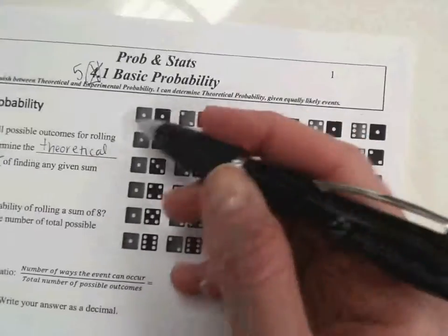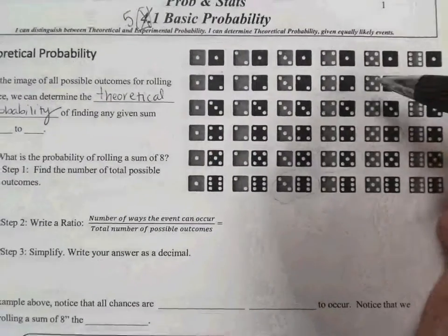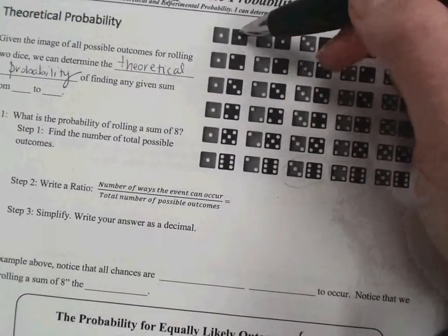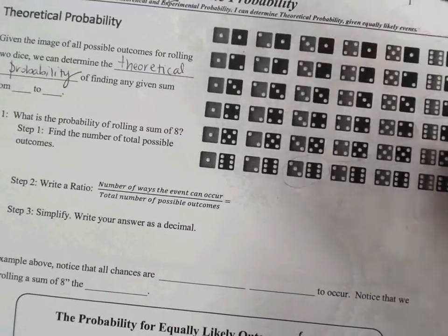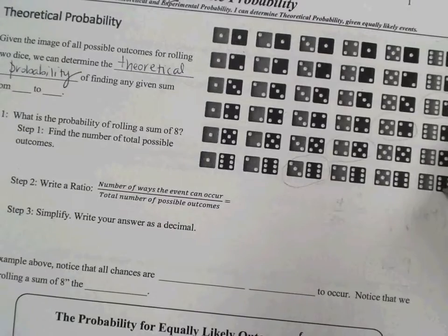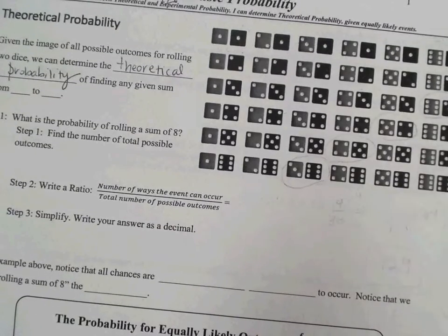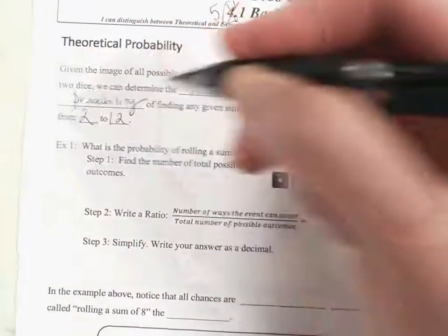If you look at the picture over here, we can see the different options of sums. The lowest sum we can possibly have is 2, and the highest we can possibly have is 12. So from 2 to 12.